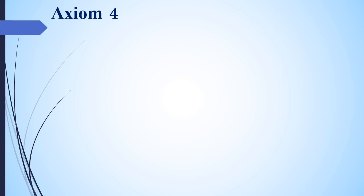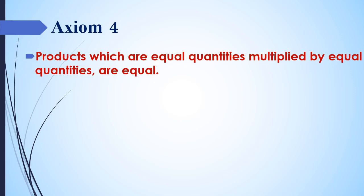Axiom number 4: Products which are obtained by multiplying equal quantities by equals are equal. If quantity A equals quantity B, then the answers obtained by multiplying both A and B by C are equal, so we can write AC equals BC.